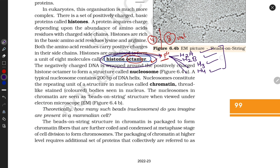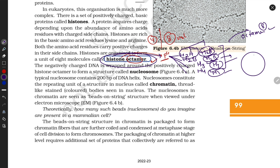How do these four proteins make an octamer? Octamer means eight units, but there are only four proteins. Each one is present in pairs — H2A is two in number, H2B is two, H3 is two, and H4 is two. Two plus two plus two plus two equals eight. So the histone octamer is made up of four kinds of histone protein, each present in pairs.